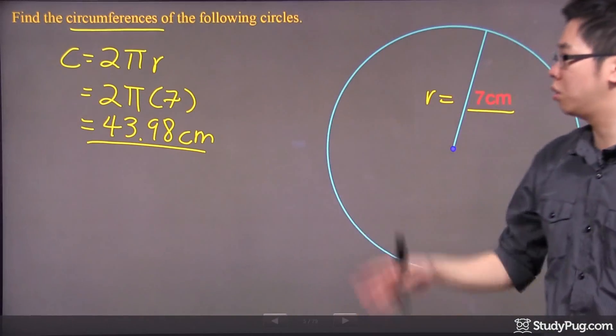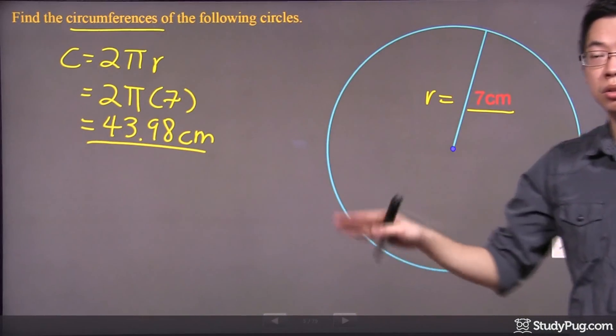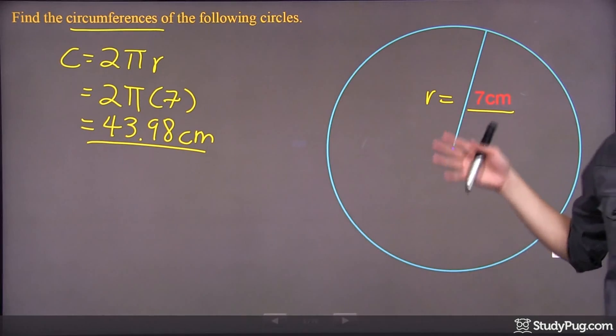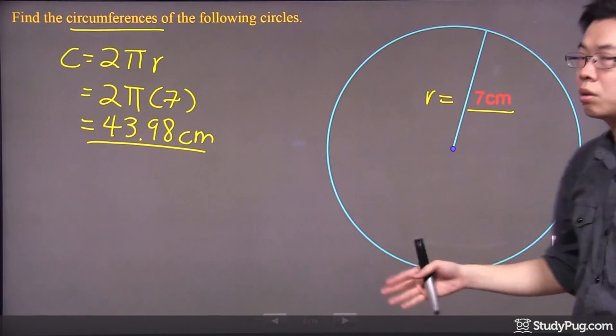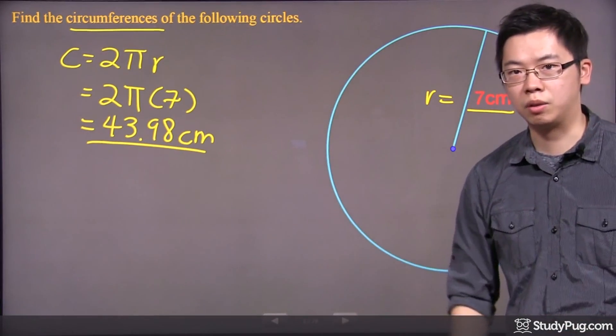So be careful, make sure you know your equation - the circumference is 2πr. Make sure the information provided to you is the radius. If it's a diameter, please cut it in half to get the radius.